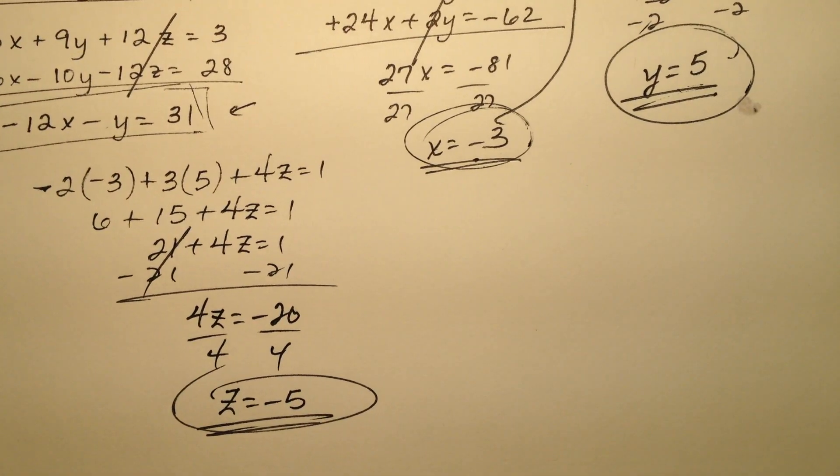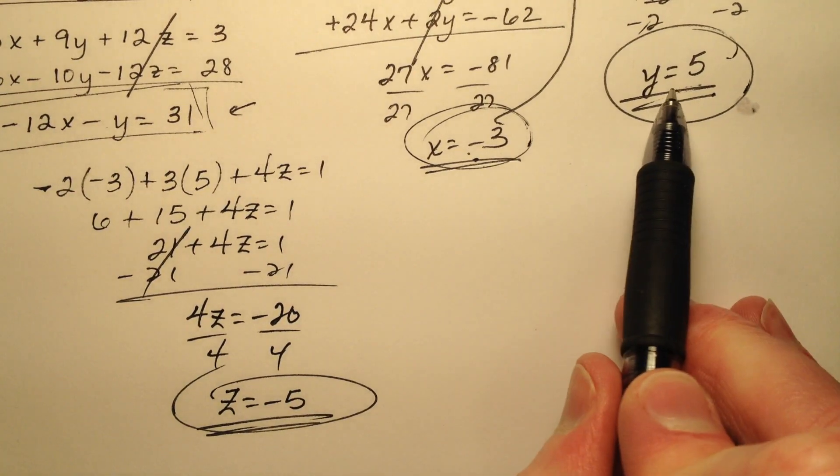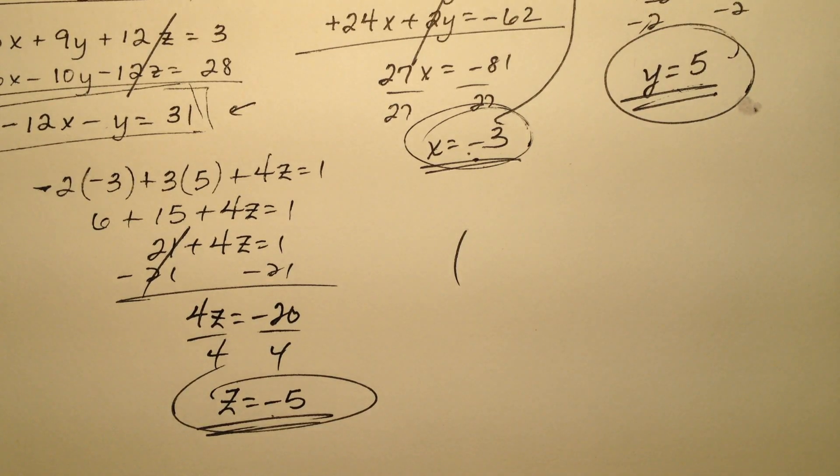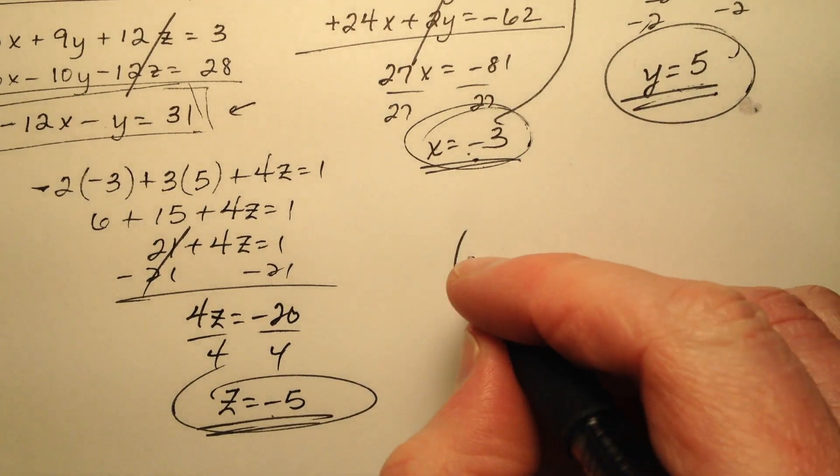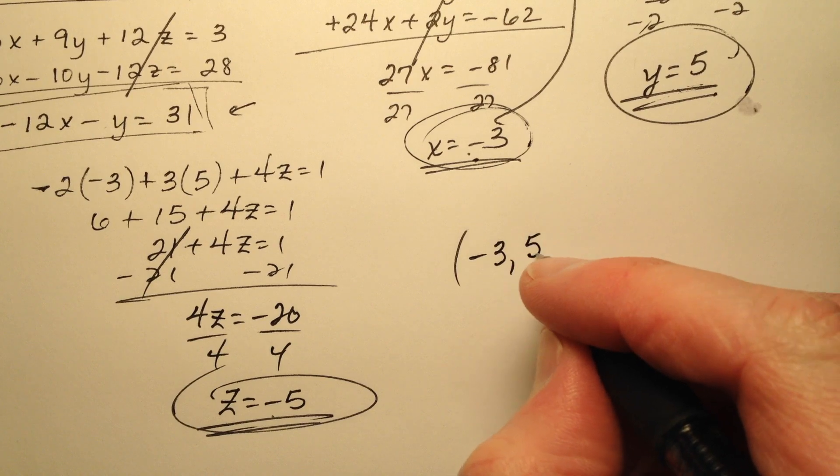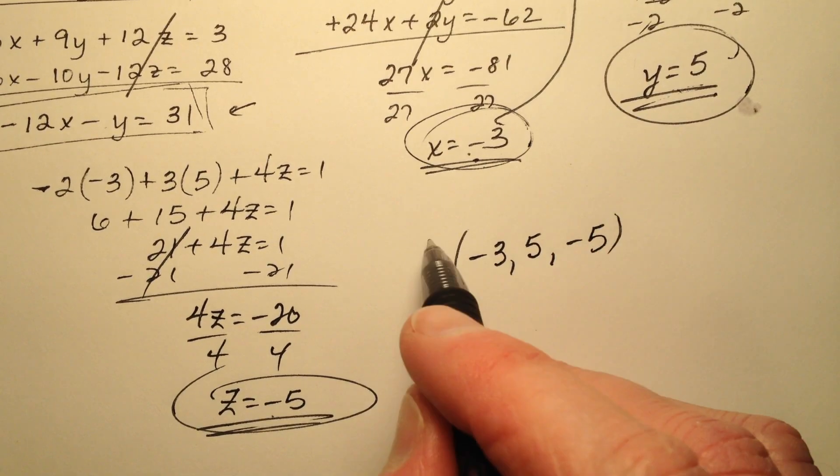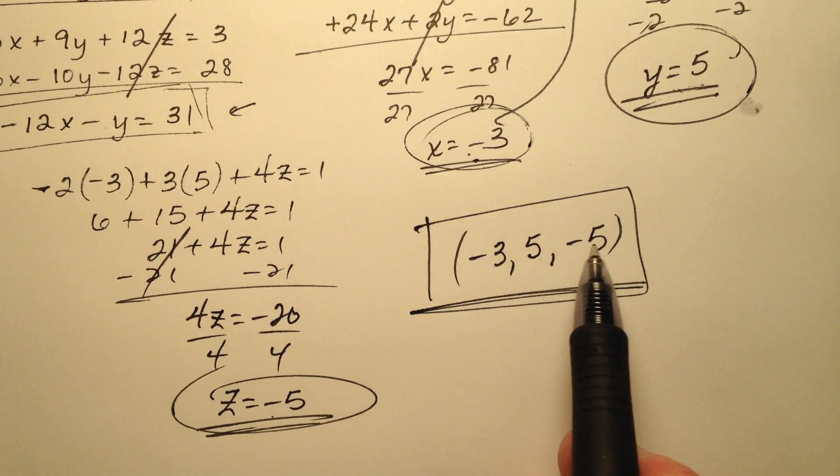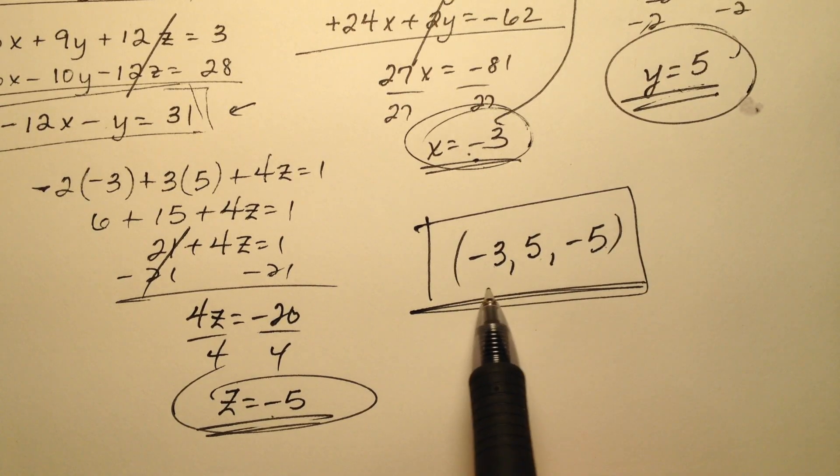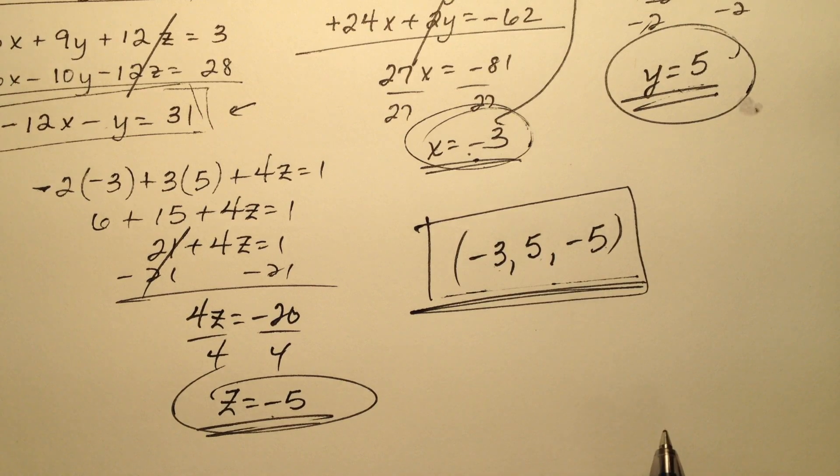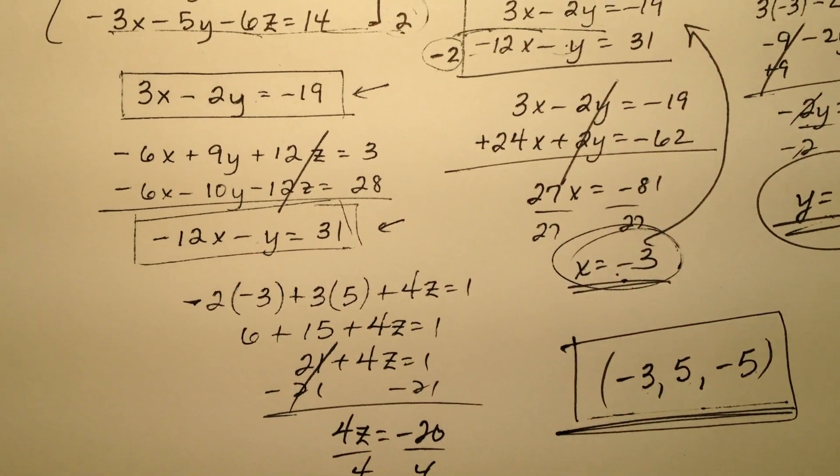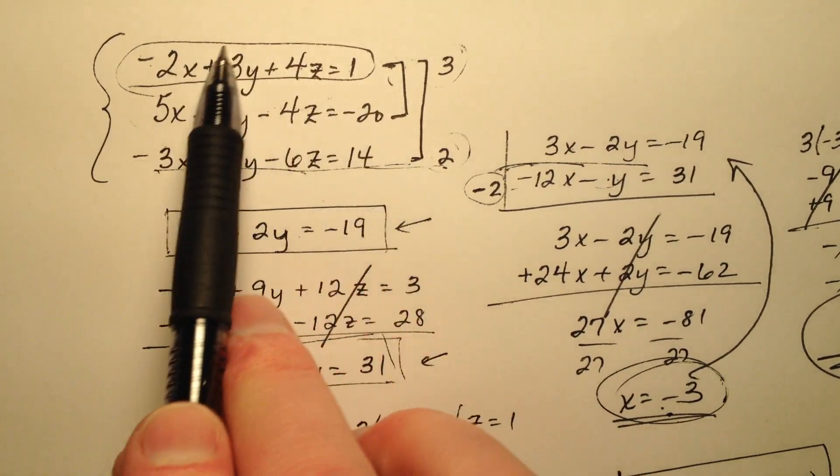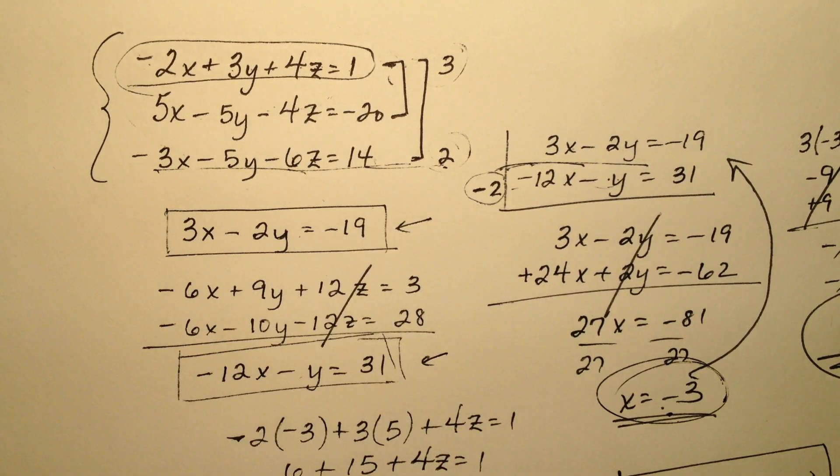So now I have values for all three of my variables, x, y, and z. So let's go ahead and write that solution as an ordered triplet. So I have my negative 3 and then my 5 and then my negative 5. And just be sure to write those in alphabetical order, x, y, z. So this ordered triplet, negative 3, 5, negative 5, is going to be the solution for this system with three equations and three unknown values.